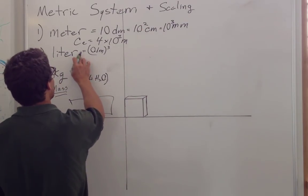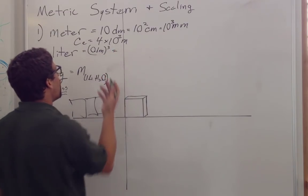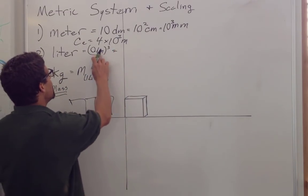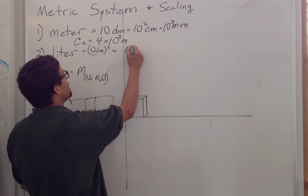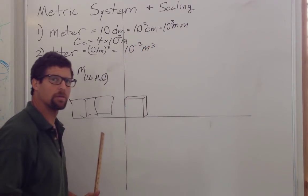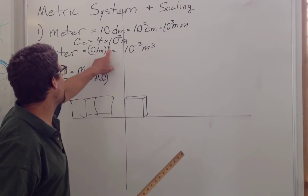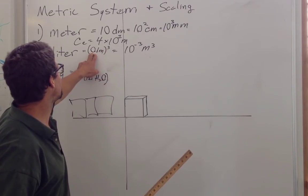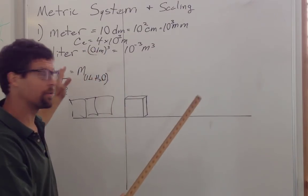So we can write then that a liter is equal to, we have it here already. We could just carry that out, and this is 10 to the negative 3 meters cubed. So the key is you'll have to cube the decimeter as well when you get volume.